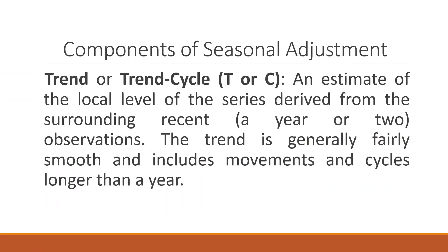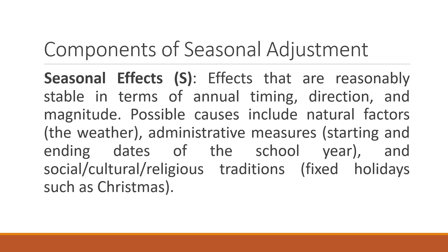Components of seasonal adjustment: The first is the trend or trend cycle — an estimate of the local level of the series derived from the surrounding recent one or two years of observations. The trend is generally fairly smooth and includes movements and cycles longer than a year. The second component is the seasonal effects — effects that are reasonably stable in terms of annual timing, direction, and magnitude. Possible causes include natural factors like weather, administrative measures, school start and end dates, and social, cultural, and religious traditions such as fixed holidays like Christmas.